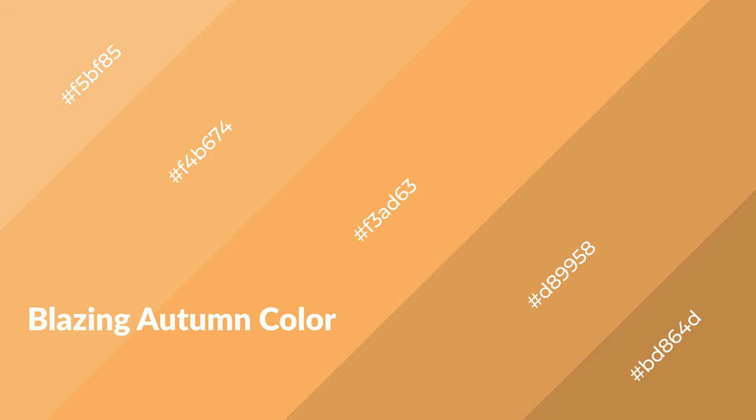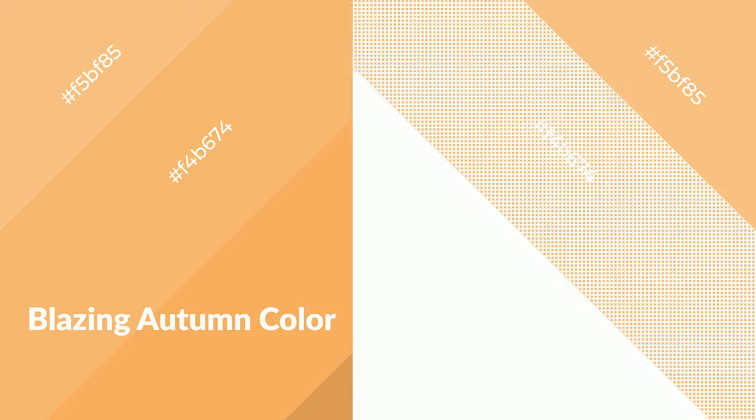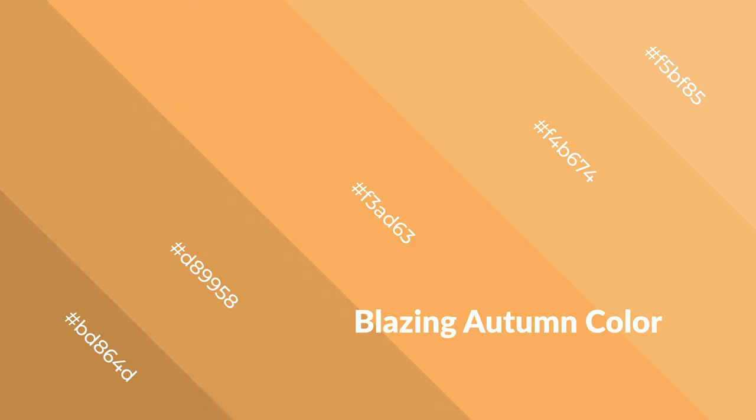Blazing autumn is a warm color and it emits cozier and active emotions. Warm colors are symbols of warmth, fire, heat, and sunshine. It also evokes joy, passion, love, and even anger. You can see them used in restaurants and gyms.